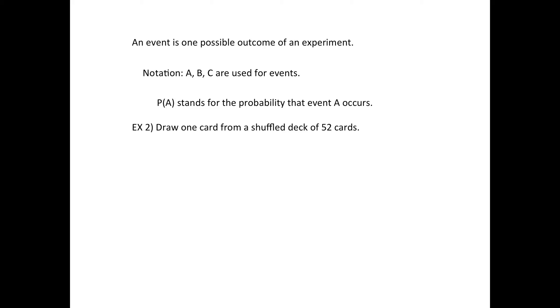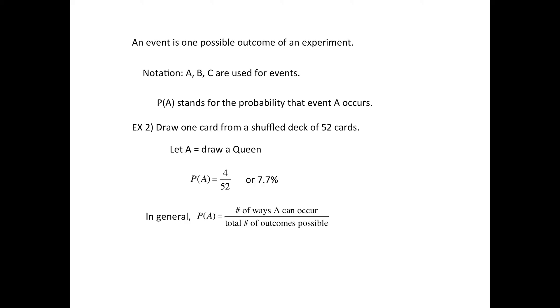Back to an example. If you're not really familiar with cards, you might want to just Google playing cards and then go to images. Suppose you have a deck of 52 cards — that's a standard deck and it's shuffled so that it's random — and draw one card. The event A is going to be draw a queen. What's the probability of drawing a queen? It's out of 52 cards, and there are 4 queens, so it's going to be 4 out of 52. Or if you divide it and change it to a percent, 7.7%. In general, when asked for the probability of A, you figure out how many ways can A occur — like with the last one, there were 4 queens — and then what is the total number of outcomes possible. With 52 cards, we had 52 for the denominator.